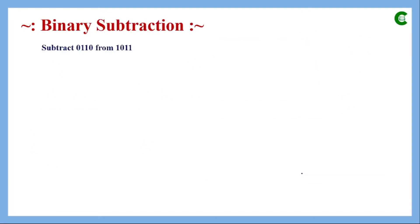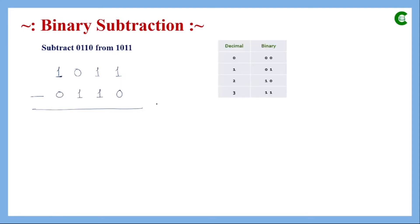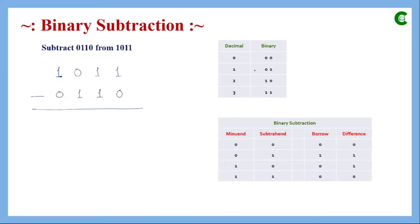Next we will learn about binary subtraction, where we subtract one 4-bit number from another. Before performing the subtraction, let's learn the rules. When 0 is subtracted from 0, the difference is 0 with no borrow. When 0 is subtracted from 1, the difference is 1 with no borrow. When 1 is subtracted from 1, the difference is 0 with no borrow — the same as in decimal.